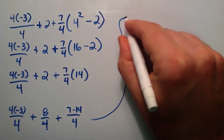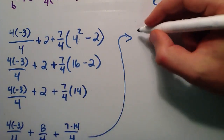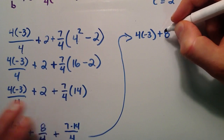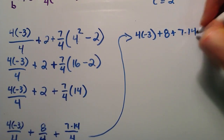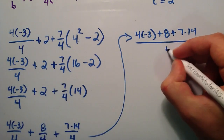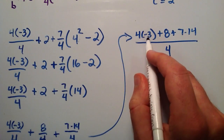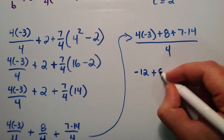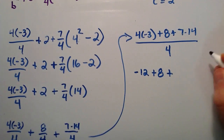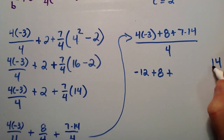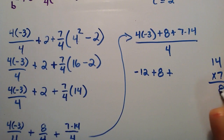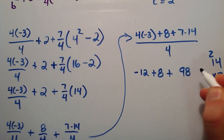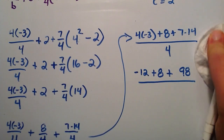Now we have three terms all over the same common denominator of 4, so we add the numerators together. The first numerator is 4 times negative 3, added to 8, added to 7 times 14, all over 4. Going left to right: 4 times positive 3 is 12, so 4 times negative 3 is negative 12. Then we add 8, and add 7 times 14. If you need to work it out by hand: 7 times 4 is 28, 7 times 1 is 7, add the 2 gives 9, so 7 times 14 is 98. These are all over the common denominator of 4.